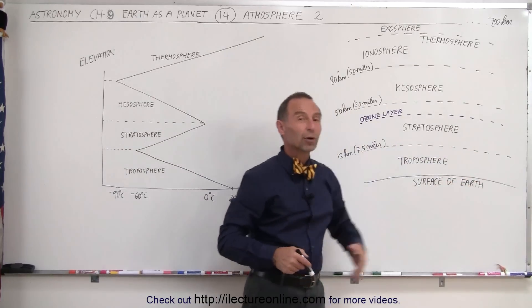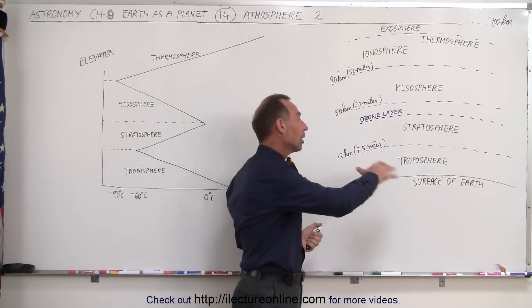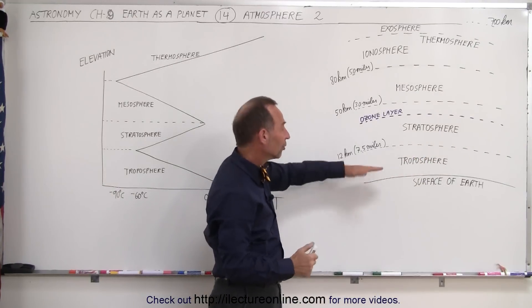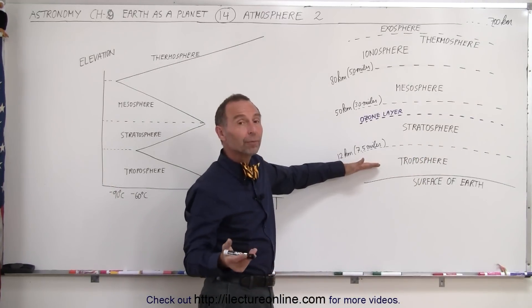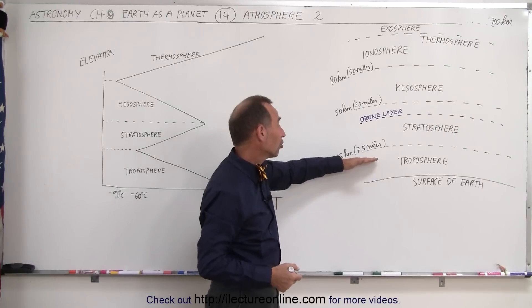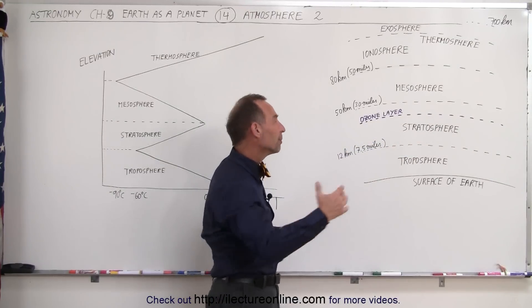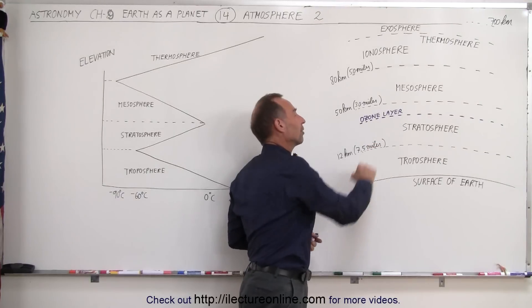The troposphere is basically where all weather occurs, all clouds, thunderstorms, all the weather, the rain, everything happens in the troposphere. Travel by passenger jet also happens within the troposphere, and only high-performance military jets can make it up into the stratosphere.